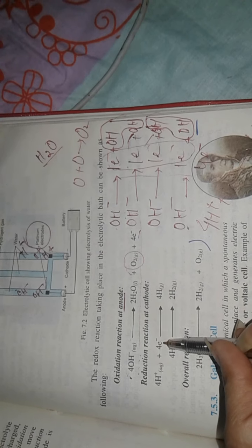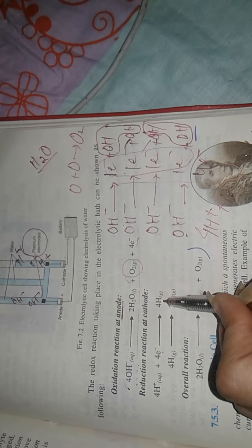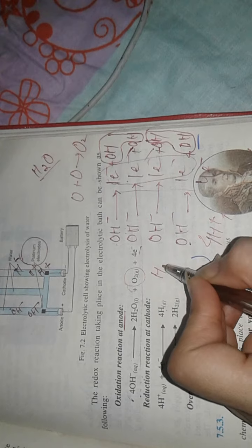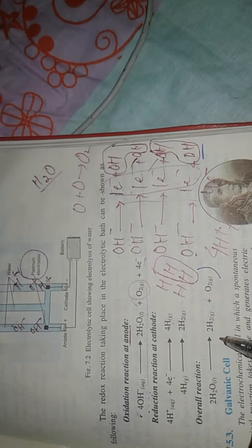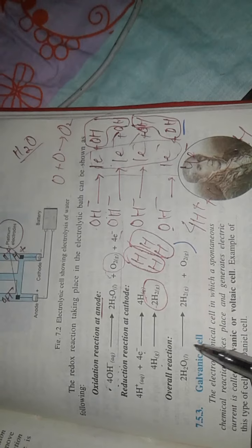Similarly, if we take 4 H positive ions, they gain 4 electrons and form 4 H molecules. So the overall equation: when we break down water through electrolysis, we will get oxygen gas in anode and in cathode we will get hydrogen gas.